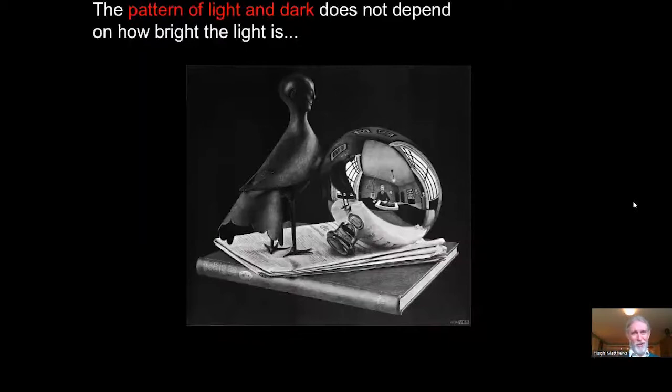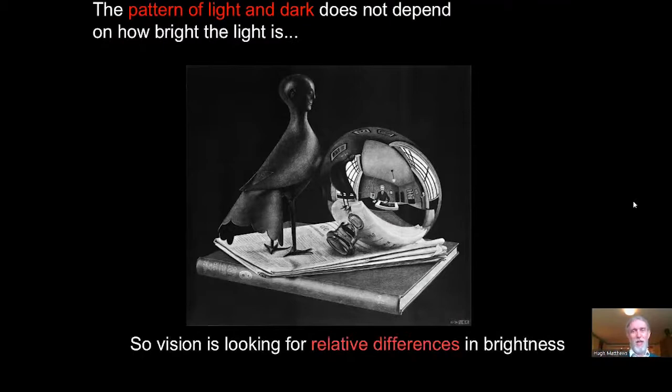It will still be about 20 times as much as is reflected from a black surface, even though the absolute intensity of light reflected changes a lot. So the pattern of light and dark does not depend on how bright the light is, but instead on how good a particular object is at reflecting it. So what vision is looking for is relative differences in brightness between the bright regions, the high reflectance regions of the visual world, and the dark regions, the low reflectance regions in the visual world. And we refer to these relative differences as being visual contrast.